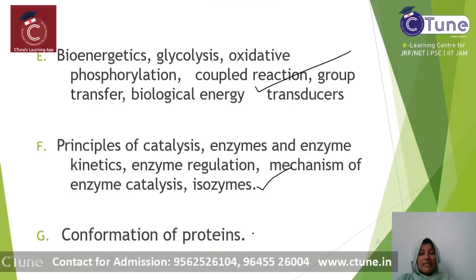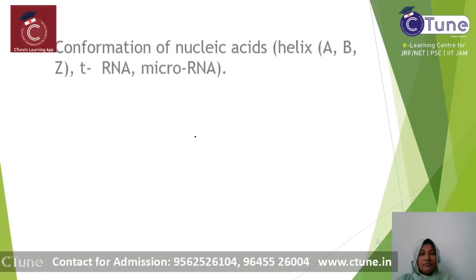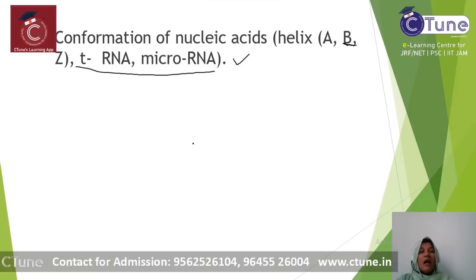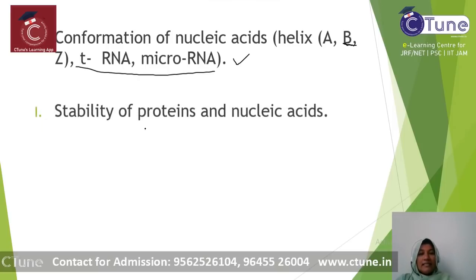Next is Conformation of Protein, which covers domain, motifs, and the Ramachandran plot — it is important even if it seems boring. Next is Conformation of Nucleic Acids: the common B-form is primary, but you should also study the A and Z forms, as well as tRNA and microRNA. Next is the Stability of Proteins and Nucleic Acids.